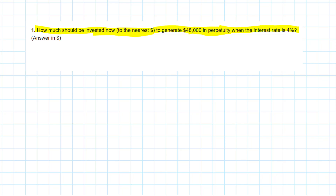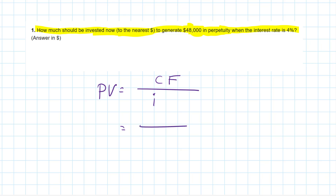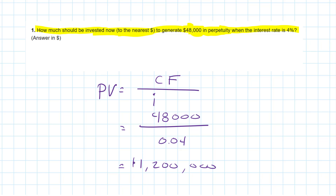The answer to this question lies in the present value of a perpetuity formula, which I can write down on my scratch paper. The present value of a perpetuity equals the annual cash flow divided by the interest rate. They gave us the cash flow and the interest rate of 4%, so present value equals $48,000 divided by 0.04, which equals $1,200,000.